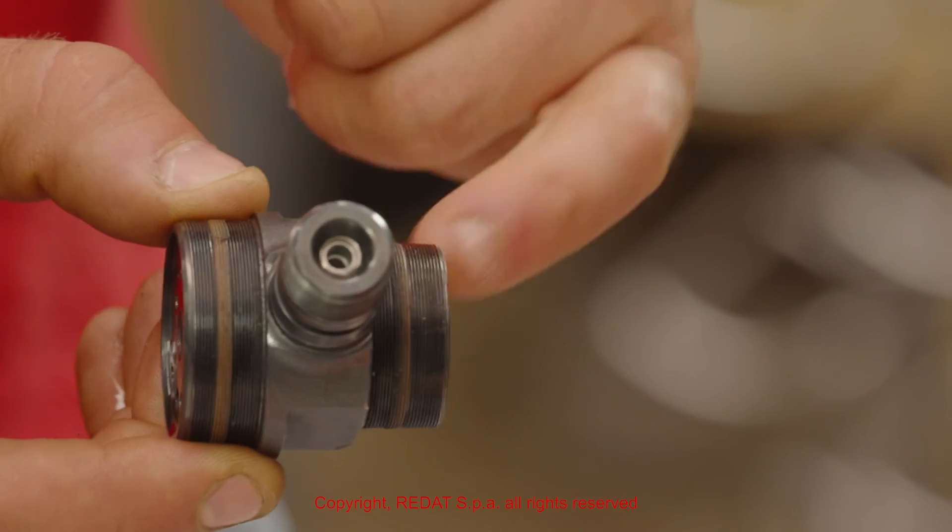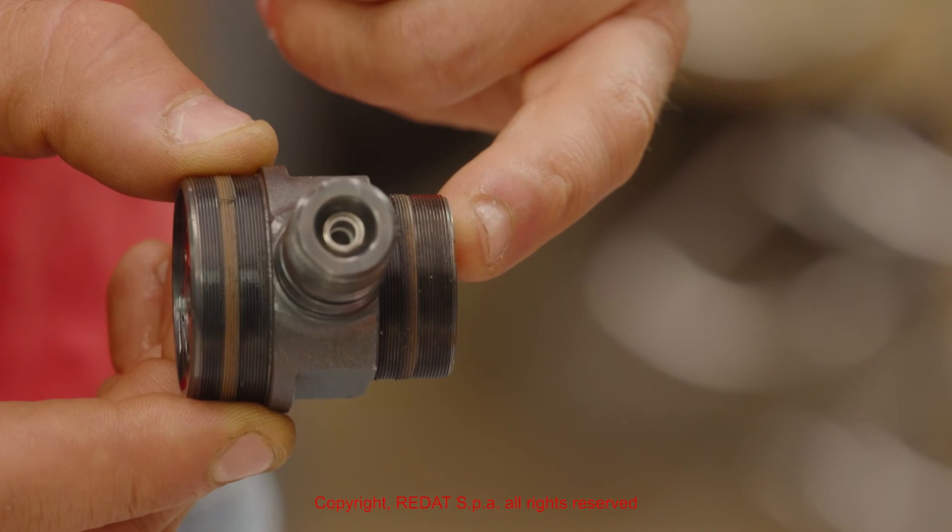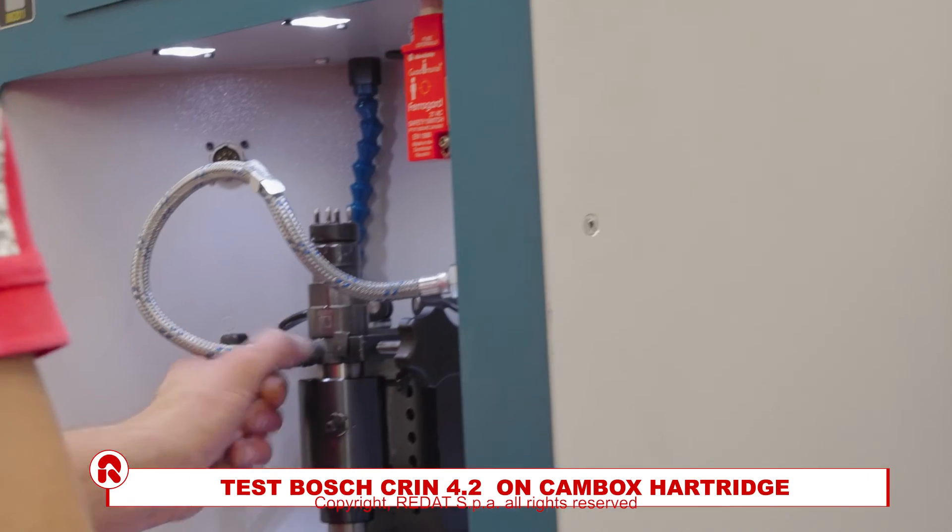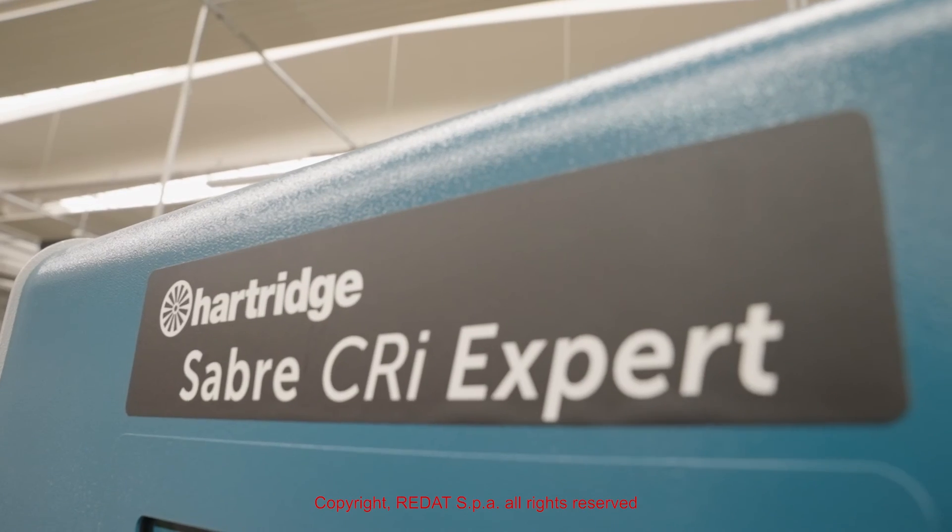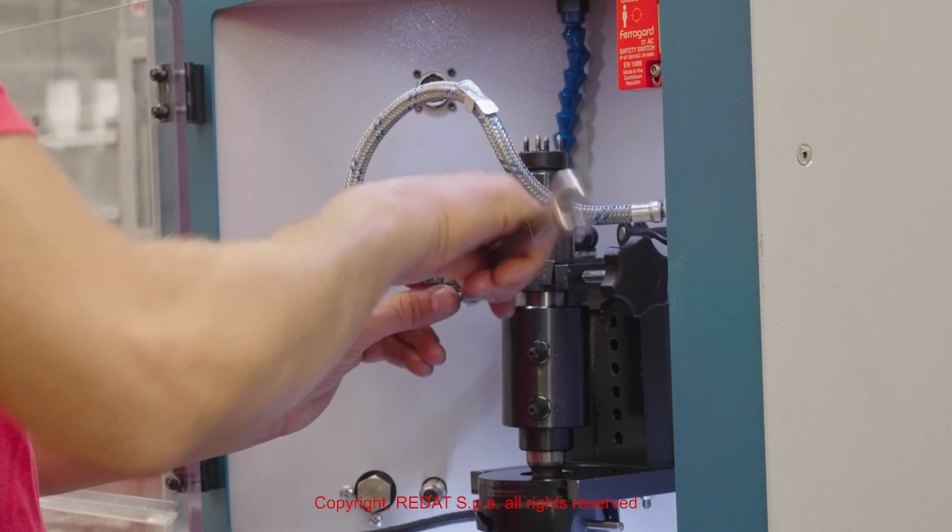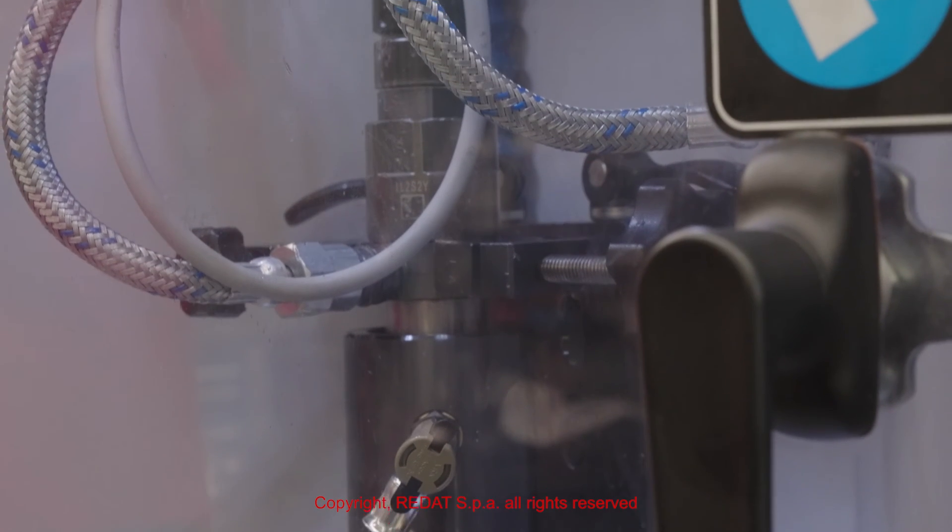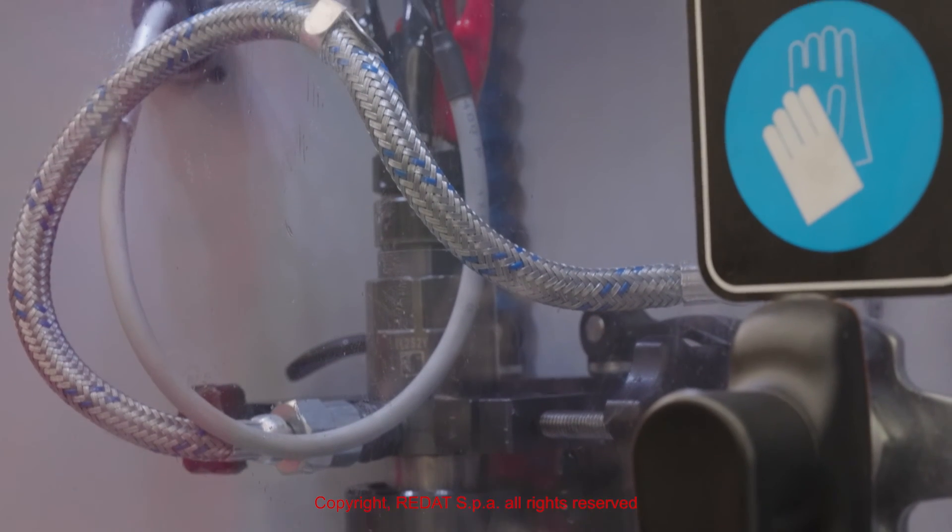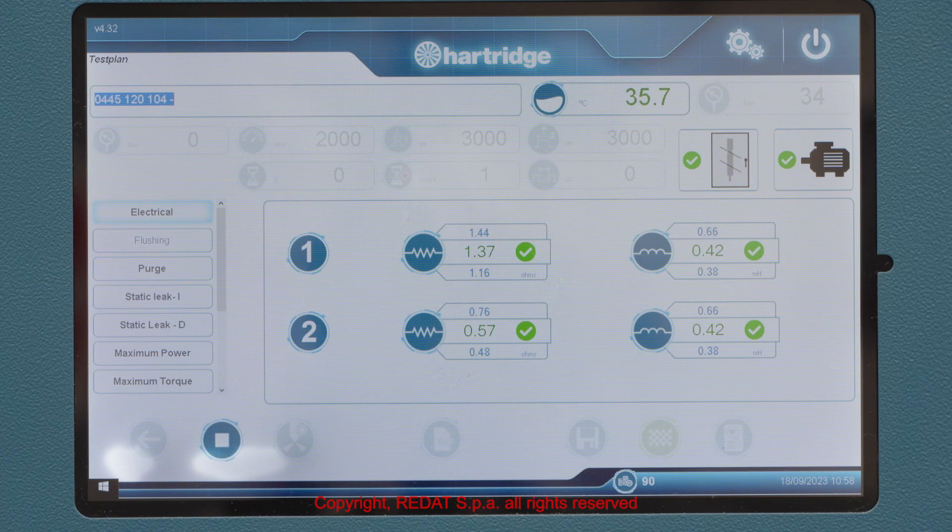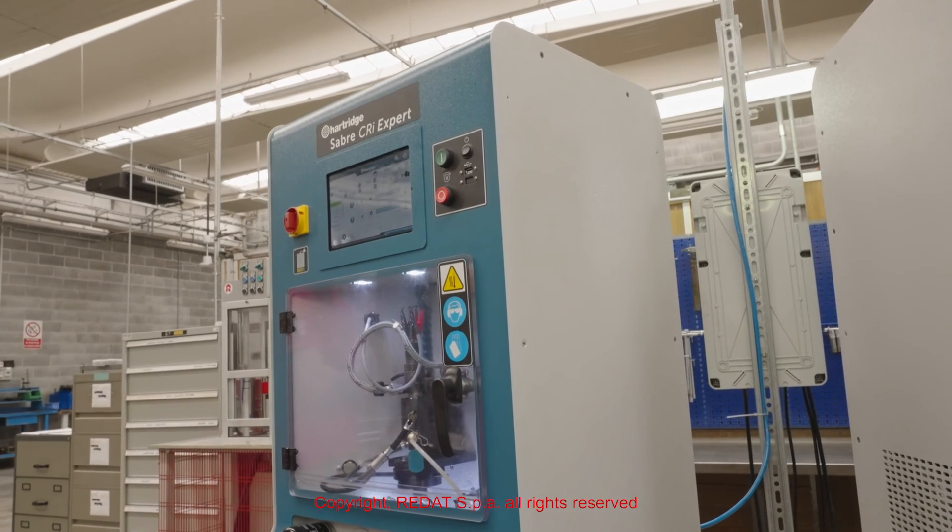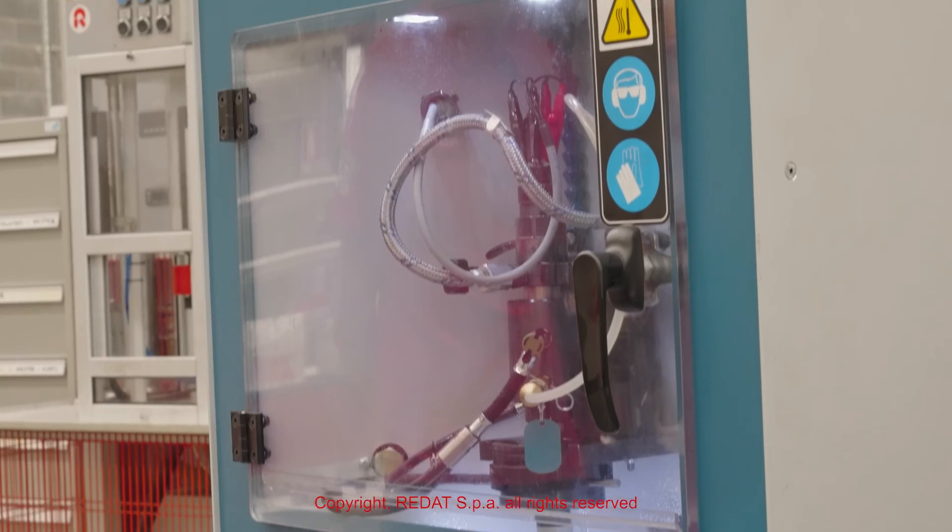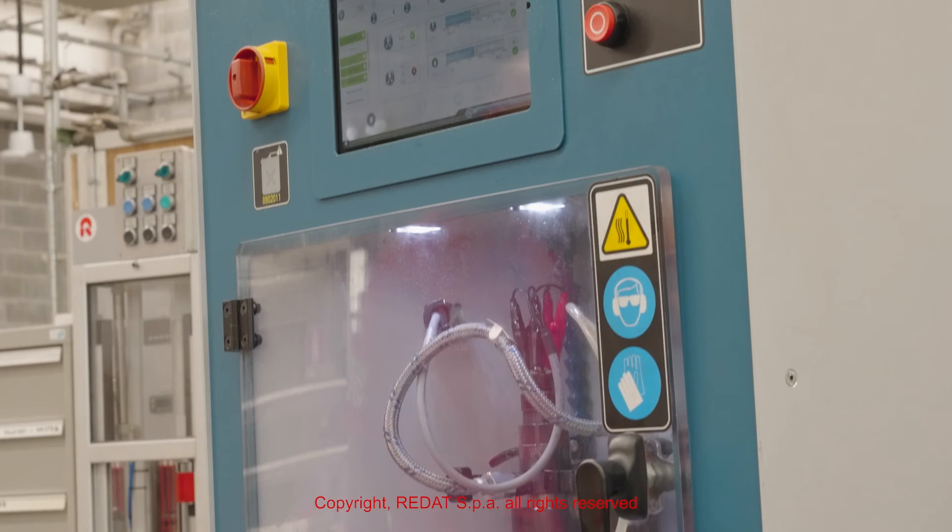The filter is now installed. Now we will demonstrate the testing of the Bosch CRIN 4.2 injector using the Hartridge test bench. We start by installing the injector on the Hartridge test bench using the appropriate adapter. In the software, it is possible to select the make and model of the injector to be tested. By pressing start, all the tests are carried out automatically.